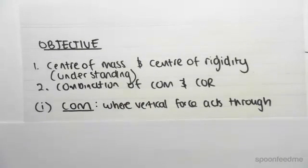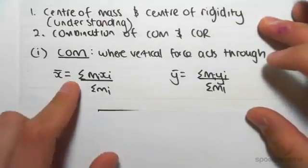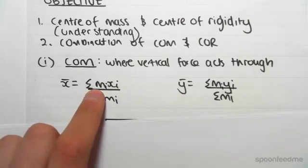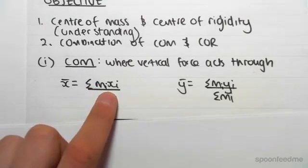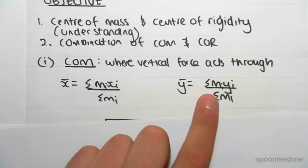So first of all, the center of mass. The center of mass essentially is where the vertical force acts through. We can be given a formula where we can say that x̄ and ȳ is given by the sum of the mass of each component times its x to its centroid divided by the sum of the mass. For the y, it's the sum of the mass times y divided by the sum of the mass.